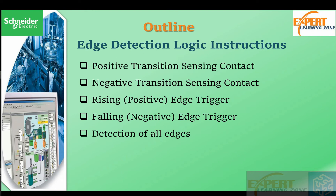We are going to study the following instructions: positive transition sensing contacts, negative transition sensing contact, rising or positive edge trigger, falling or negative edge trigger, and detection of all edges — this instruction is able to detect both the falling and the rising edge.